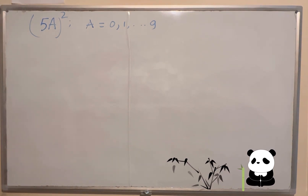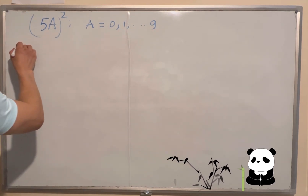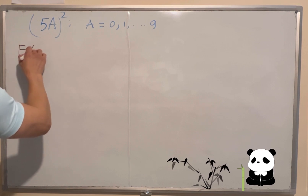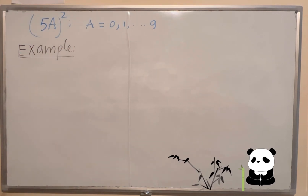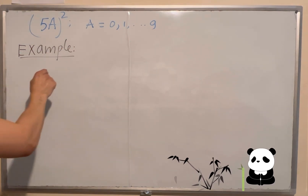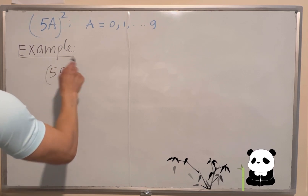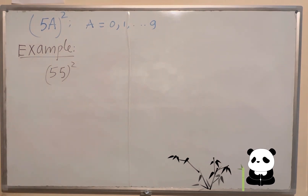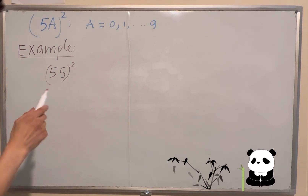I will give you some examples and show you my solution for finding out the answer quickly. As a first example, I have 55 squared. How do you find out the answer quickly? Look here carefully.